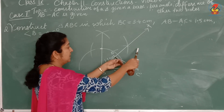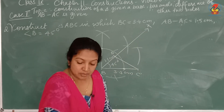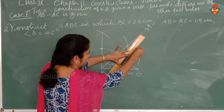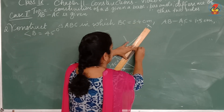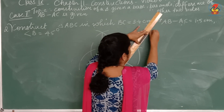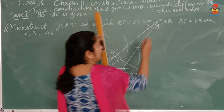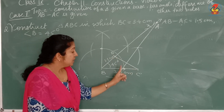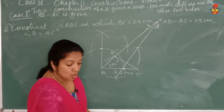Draw the perpendicular bisector of DC. Take more than half of DC and draw two arcs from each end, then join the two intersection points to form the bisector — extending both sides as needed. The point where this perpendicular bisector intersects ray BX is point A. Mark that intersecting point as A.